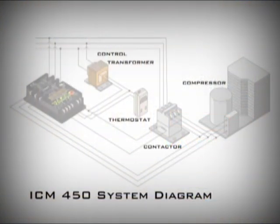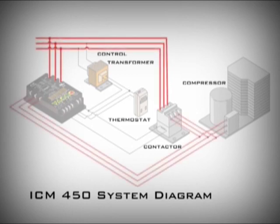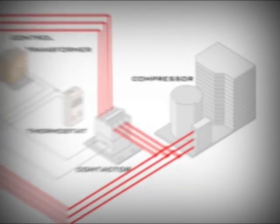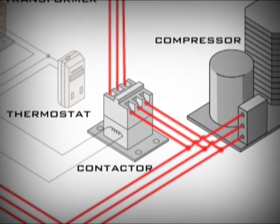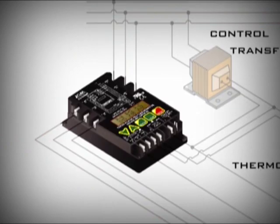With the ICM 450, your equipment is protected against power supply problems on both the line side and the load side. All power monitors check the incoming power, but most don't monitor the power at the compressor itself. So one of the most common causes of power supply problems — a malfunctioning contactor — gets completely overlooked. The ICM 450 provides compressors with total protection from power-related problems.